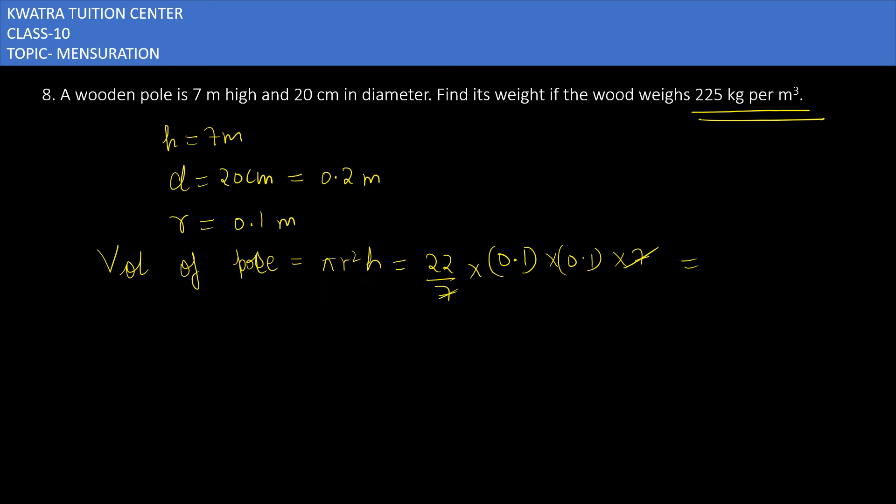You will get 22 × 0.1 × 0.1, it will give you 0.22 meter cube.